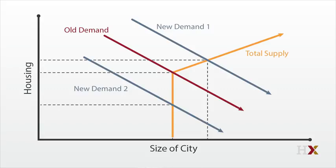After a while, of course, the housing will deteriorate, and maybe some homes will even become vacant. But the model clearly predicts that declining cities will lose population slowly, but prices will drop quickly.